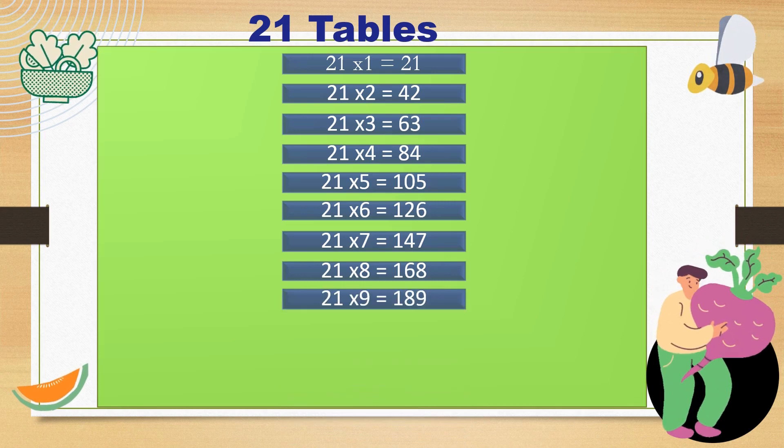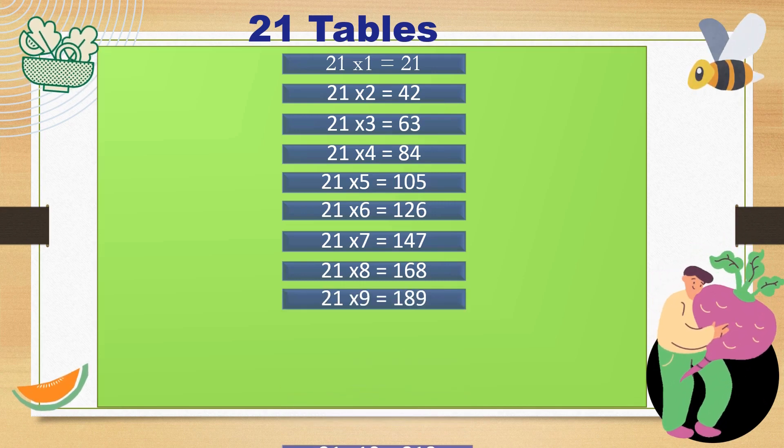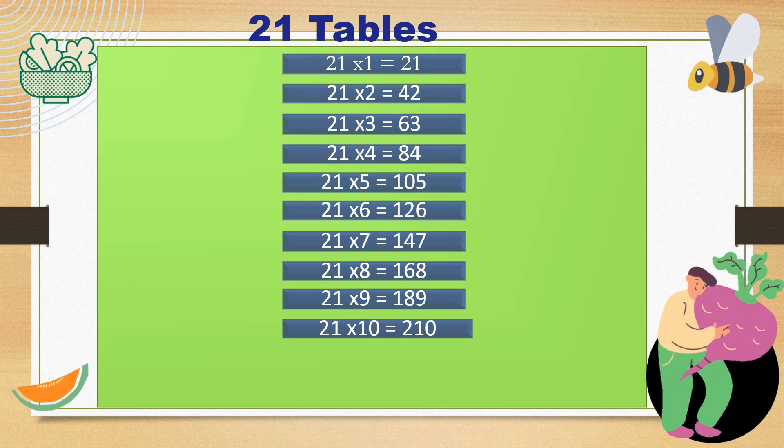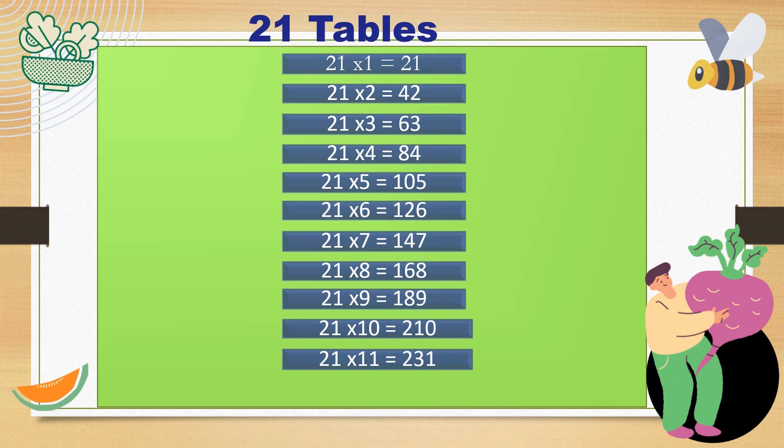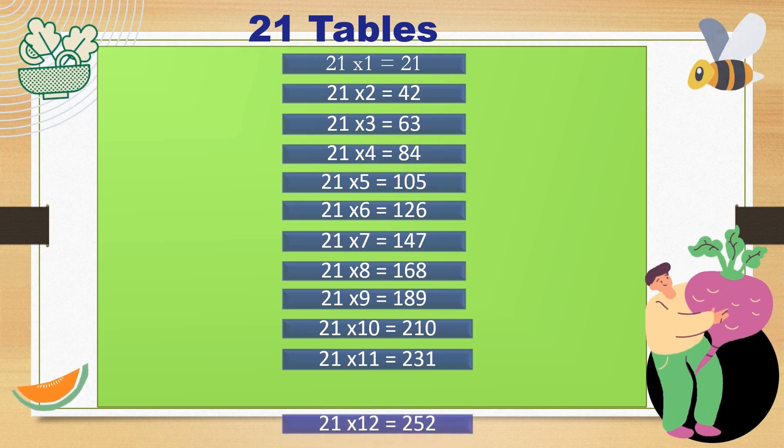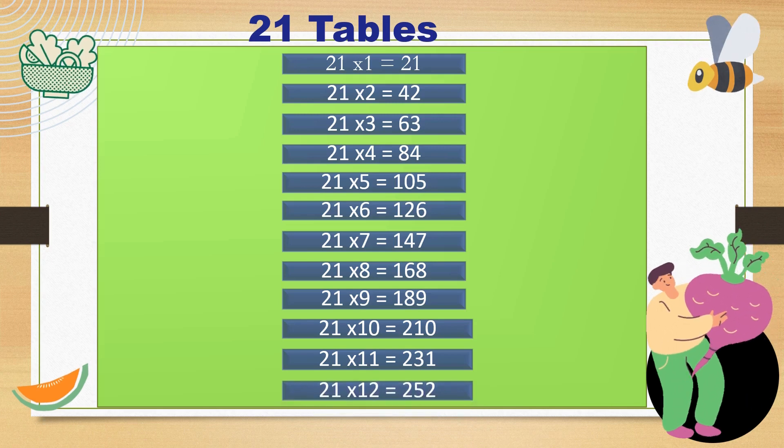21 times 6 is 126. Like a magic show, with numerical tricks. 21 times 7 is 147. Feels like we're floating, way up in heaven. 21 times 8 is 168.